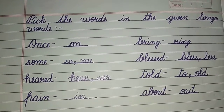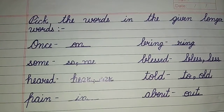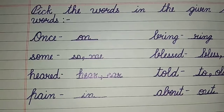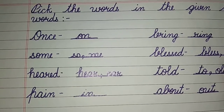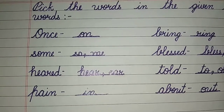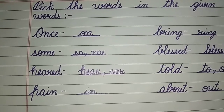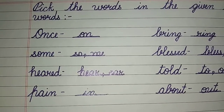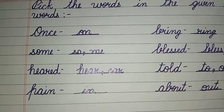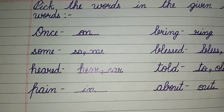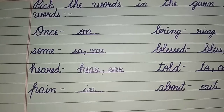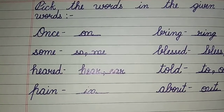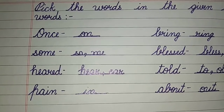Next activity: pick the short words hidden in the given longer words. For example, in 'once' (O-N-C-E), the short word is 'on'. In 'some' (S-O-M-E), the short words are 'so' and 'me'.